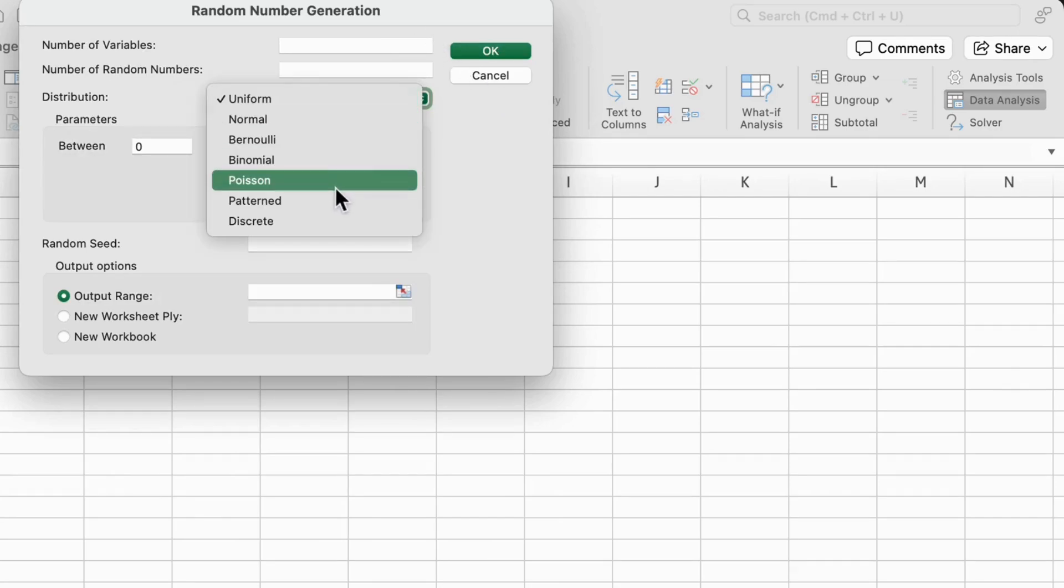We'll generate 100 different samples, each representing an hour with 100 simulated customer arrivals, assuming an average arrival rate of lambda equal to 5 customers per hour.